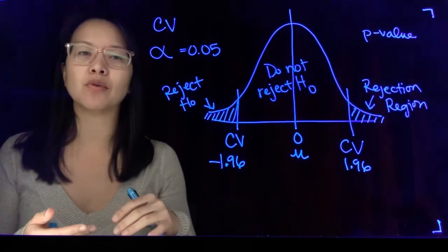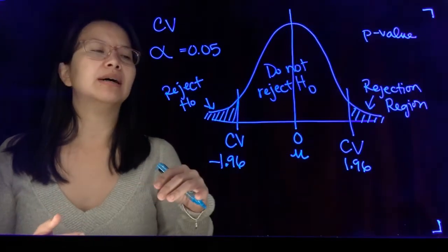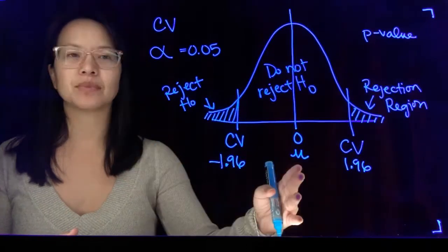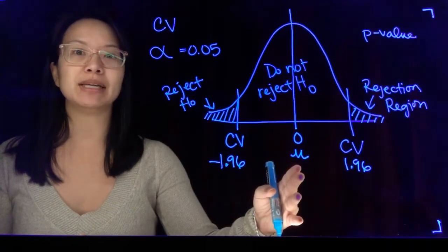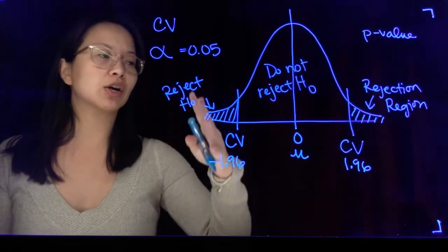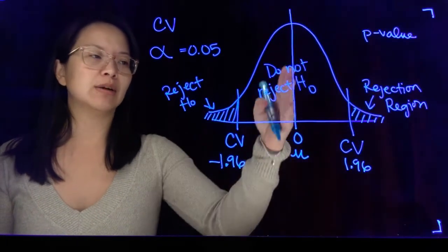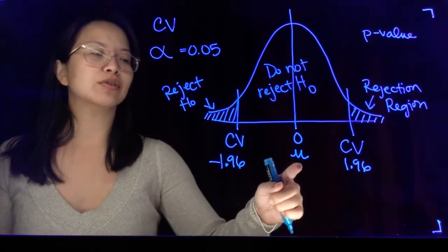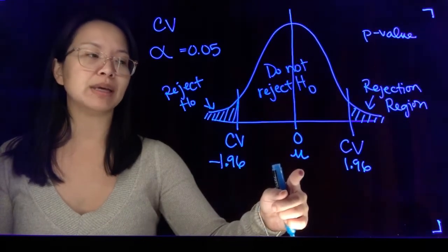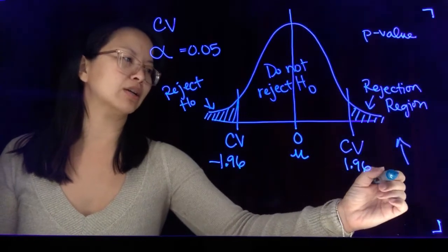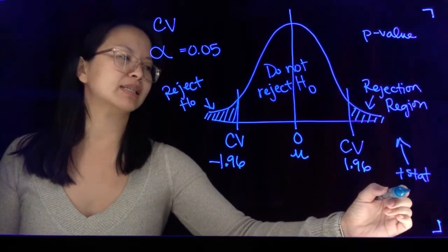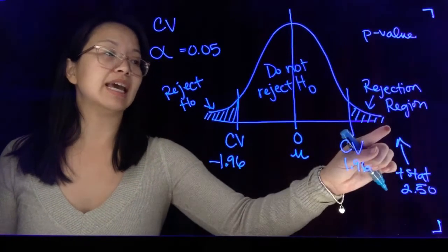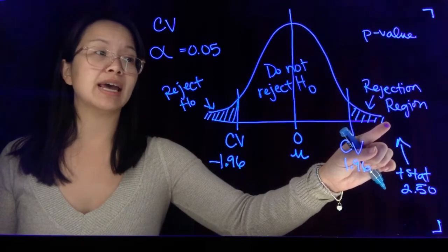If I take my sample data, analyze it, and convert it into a test statistic — meaning I put it into its applicable formula and account for sampling error and sample size — then my test statistic will fall somewhere on the curve. Let's imagine my test statistic turns out to be 2.5. This entire curve is just a number line from zero going up or down. A test statistic of 2.5 would fall somewhere out to the right, and we can see that this sample falls in the rejection region, meaning I'll go ahead and reject the null.